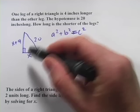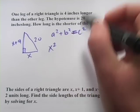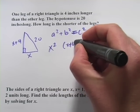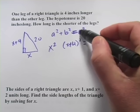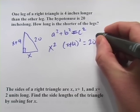So instead of a squared, we'll put in x squared. Instead of b squared, we'll put in x plus 4 quantity squared. And c squared is 20 squared.